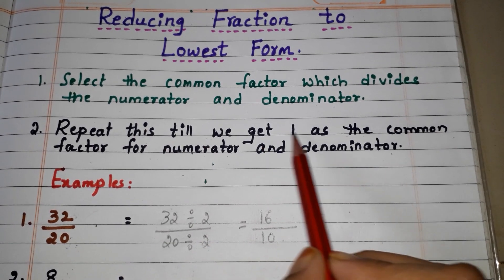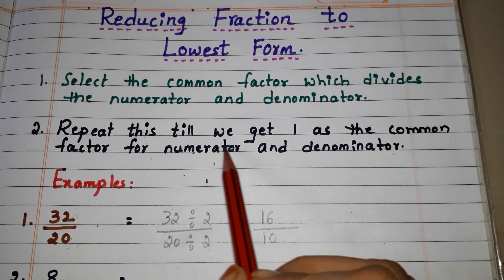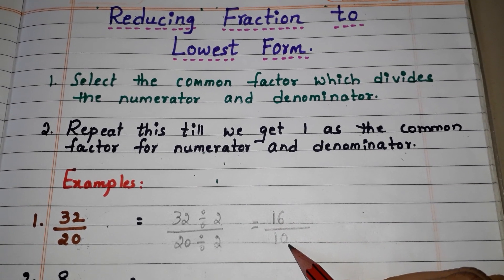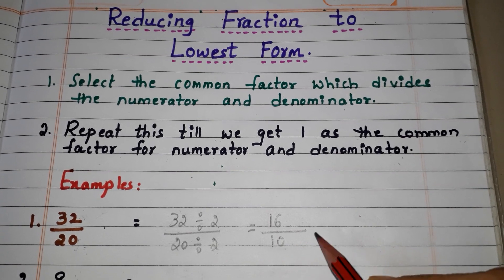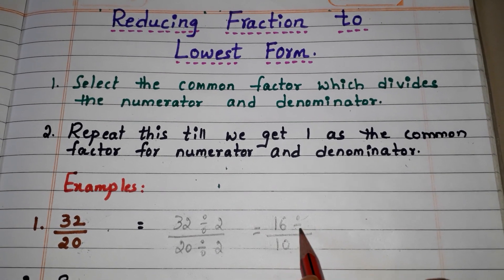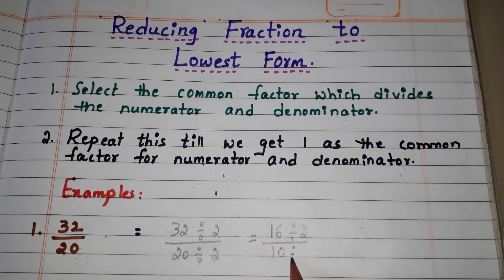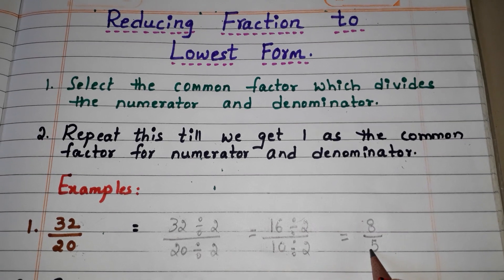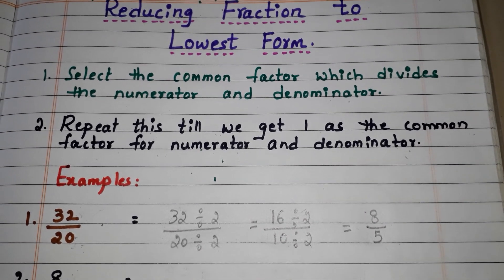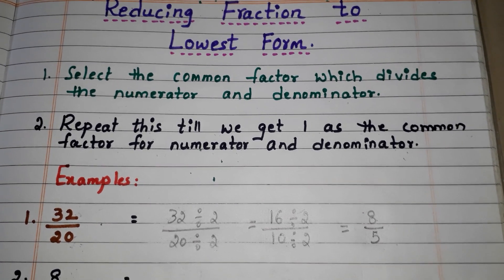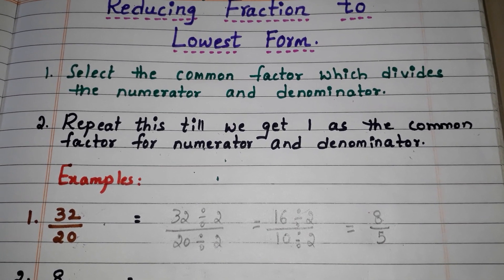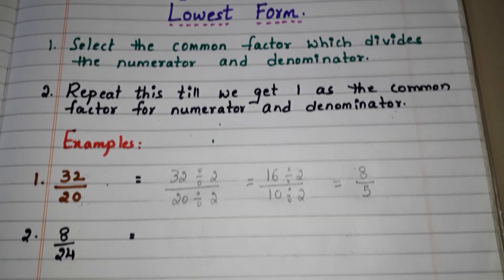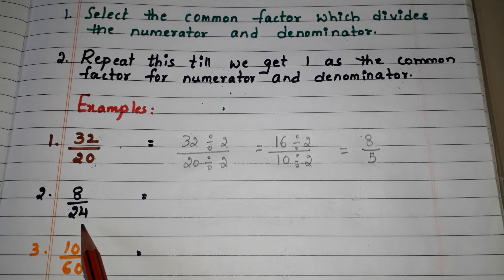Now go to point number 2: repeat this till we get 1 as the common factor for numerator and denominator. 1 is not the common factor for 16 and 10 here, so again we can select number 2, because 2 divides 16 and 2 divides 10. Write the quotients here: 8 by 5. Now only 1 is the common factor for 8 and 5, so 8 by 5 is the lowest form for the fraction 32 by 20.